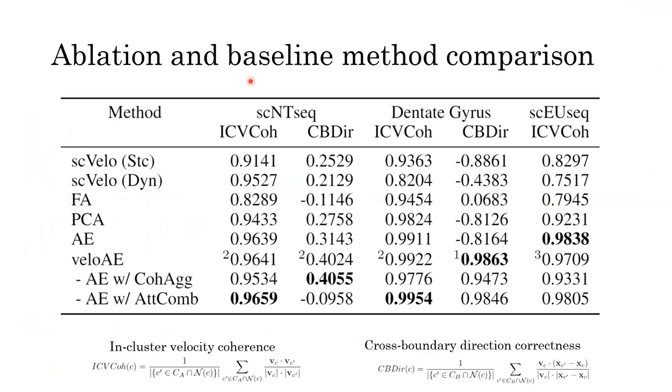Finally, we conduct experiments to compare our method with baselines and did ablation study to explore the contributions of the two modules. To quantify the performance, we propose two measurements. The first called the ICVCOH measures coherence of the vectors within a group of cells and the CBDIR metric measures the correctness of the velocities based on the ground truth.